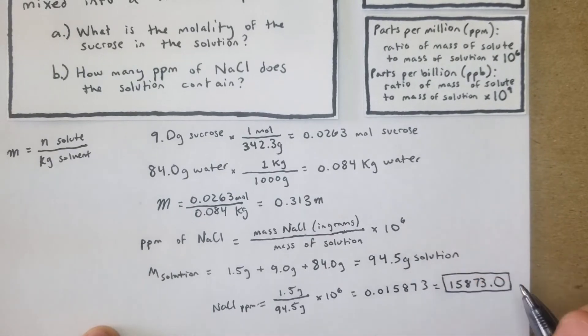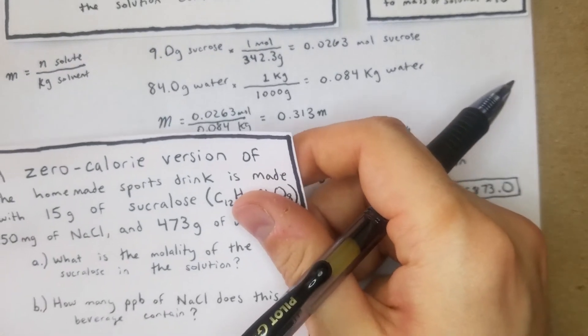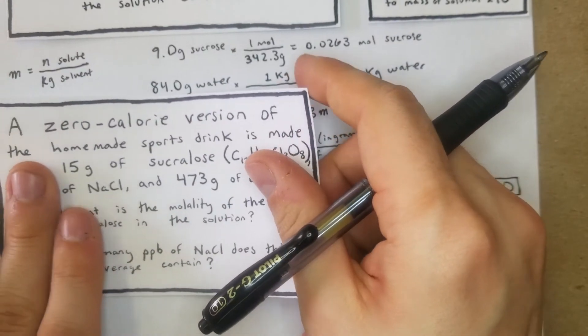PPM and ppb don't have a specific type of unit because it's more of a mathematical thing than anything else, rather than like grams or what you'd compare for reaction things. Now we're moving on to the next problem.